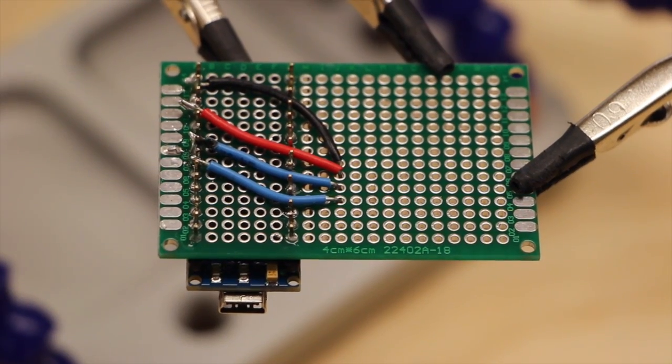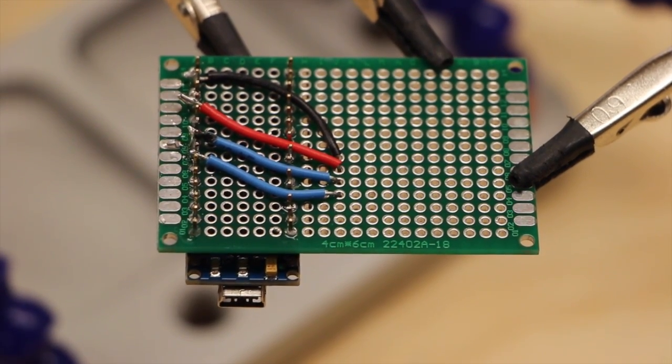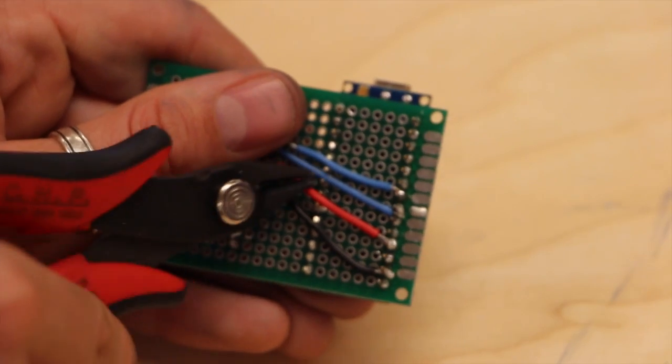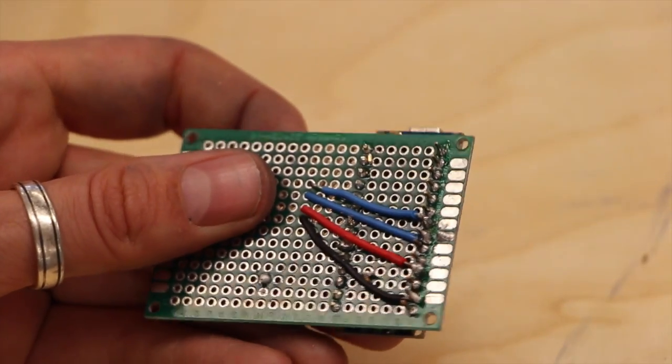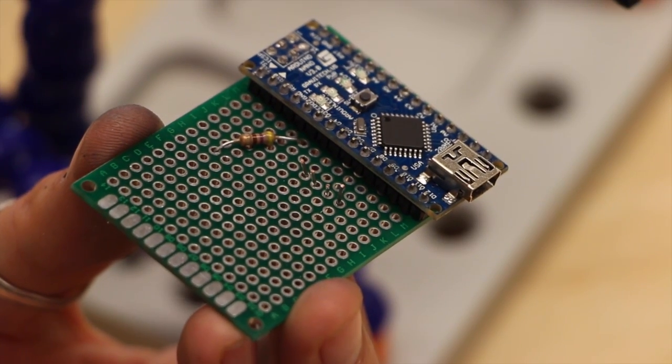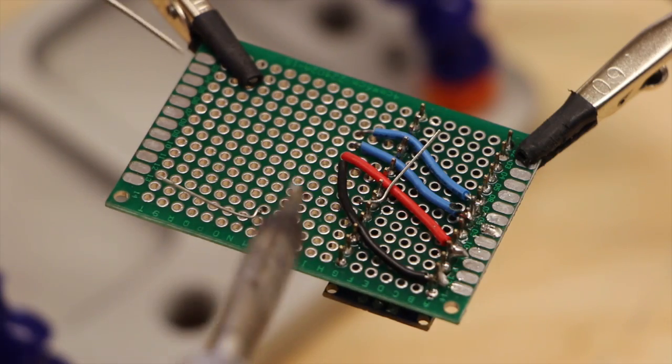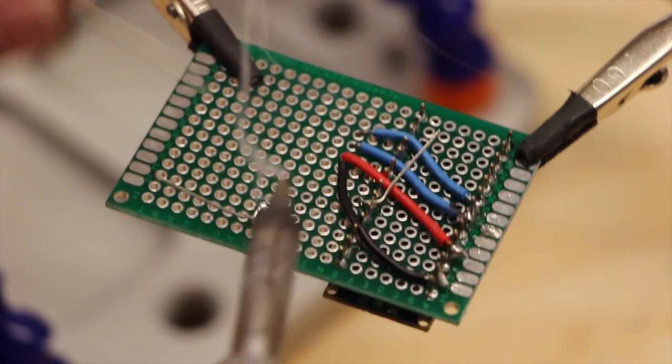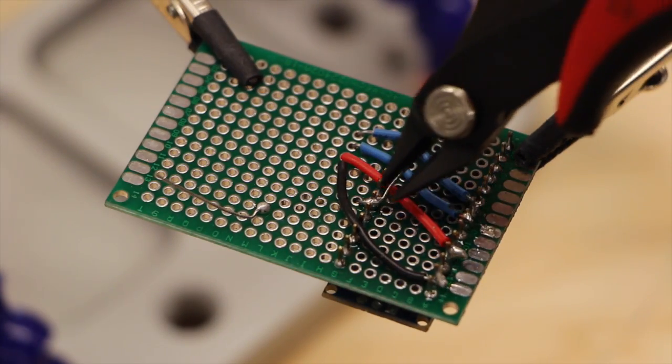The other end of these wires will be soldered to the chronodot at a later point. Next, I clipped the headers of the Nano to make room for the chronodot. Finally, I soldered a 470 ohm resistor to digital pin 3 on the Nano, and the other end to a clear spot on the protoboard. I made sure to snip the legs.